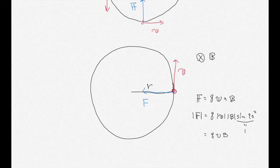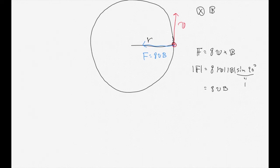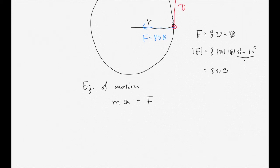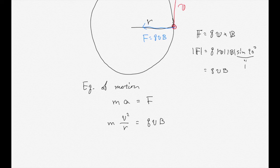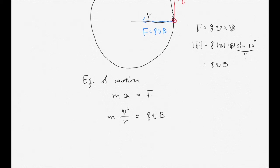Now we write the equation of motion: ma equals F. In circular motion, the centripetal acceleration is V squared over R, so the equation becomes m times V squared over R equals Q times V times B. The rotational angular frequency omega is related to velocity by V equals R times omega.